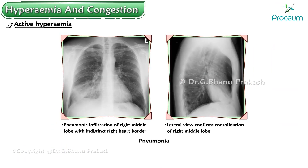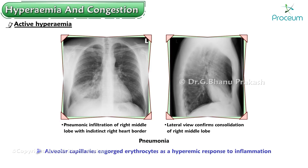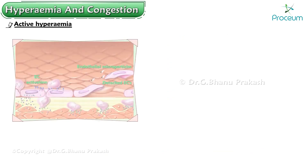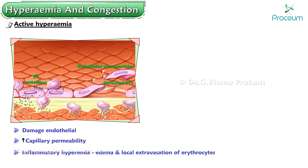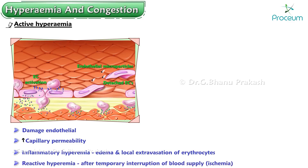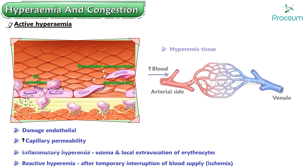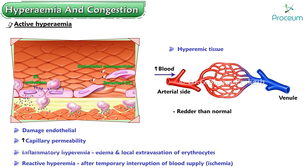In pneumonia, for example, alveolar capillaries are engorged with erythrocytes as a hyperemic response to inflammation. Because inflammation can also damage endothelial cells and increase capillary permeability, inflammatory hyperemia is often accompanied by edema and local extravasation of erythrocytes. Reactive hyperemia occurs after temporary interruption of blood supply — ischemia. Hyperemic tissues are redder than normal due to engorgement with oxygenated blood.